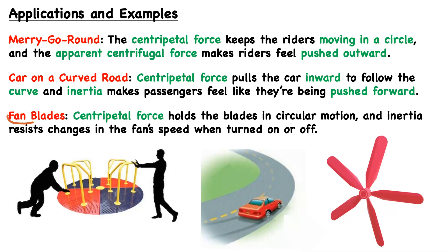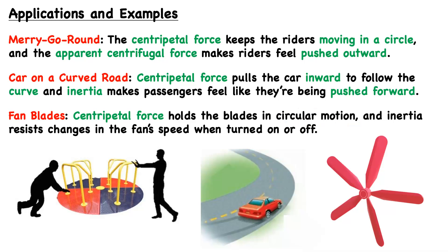Lastly, we have the example of fan blades, which is a bit different. The centripetal force holds the blades in circular motion, and inertia resists the fan's speed change when it's turned on or off. For instance, when a fast-spinning fan is turned off, it doesn't instantly stop — inertia keeps it rotating more and more slowly as opposing forces resist the rotation.